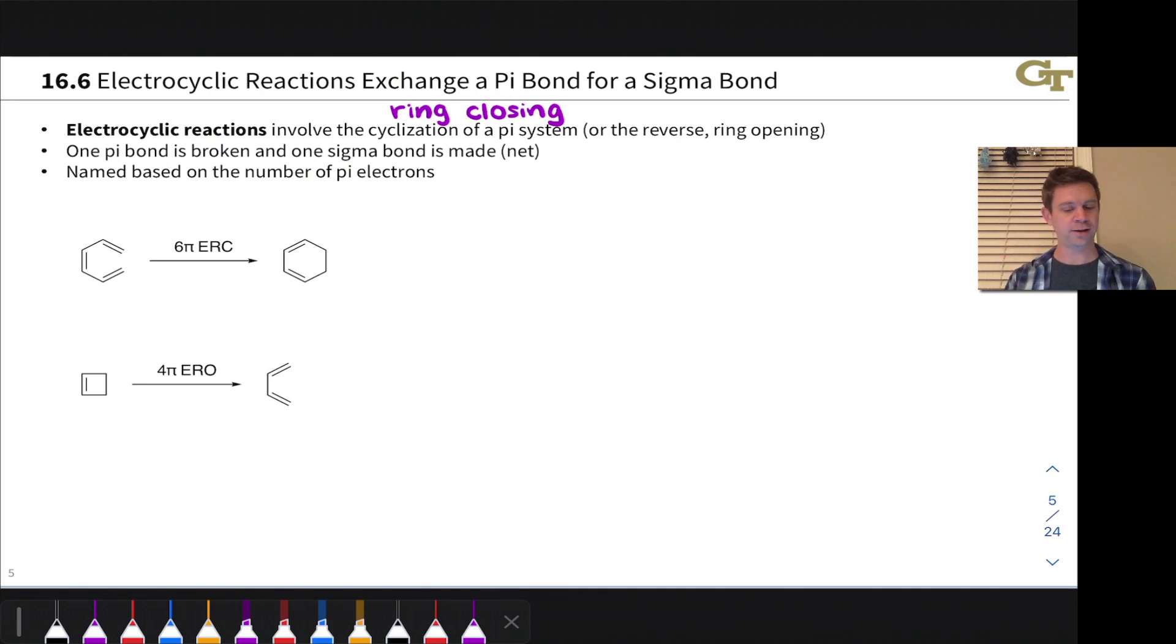One pi bond is broken and one sigma bond is made on the whole, although we're shifting pi electrons around or pi electrons plus one sigma bond to make these reactions happen. And these are named based on the number of pi electrons involved.